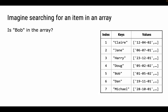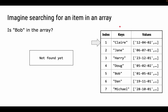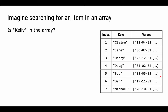Let's take this further. With a large associative array of keys and values, say we want to check if 'Bob' is in the array. The computer can only check one thing at a time. Starting at the beginning: Claire — not Bob; Jane — not Bob; Harry — not Bob; Doug — not Bob; Bob — finally found at location five. We return the associated data. Now what about Kelly? We check Claire, Jane, Harry, Doug, Bob, Dan, Michael — not found. We determine Kelly must not be in the array.